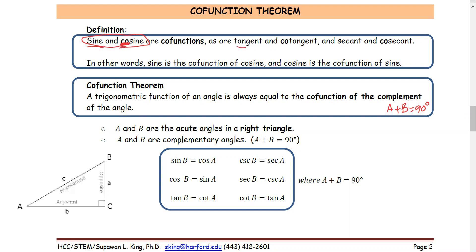The tangent and cotangent are co-functions. The secant and cosecant are co-functions — three sets. So the co-function theorem states: a trigonometric function of an angle is always equal to the co-function of the complement of the angle.